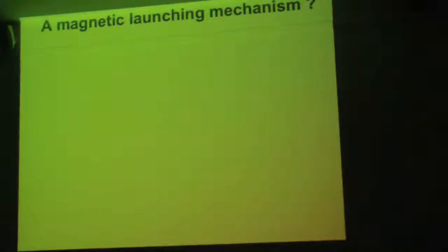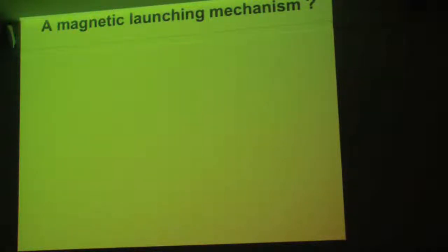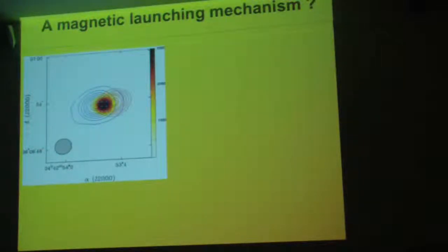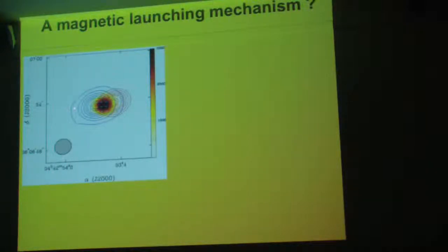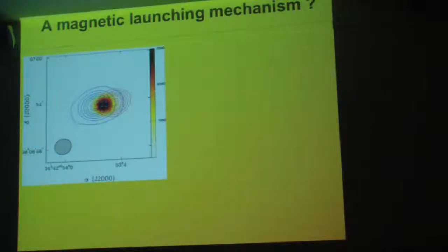During this conference we talked a lot about launching — what could be launching the outflow — and of course I propose magnetic launching. In the case of CRL 618, if I compare the direction of the magnetic field with the outflow — these are the blue-shifted and red-shifted CO outflows, the ¹²CO J=3-2 transition — what you can see, the vectors are well constrained near the central source.